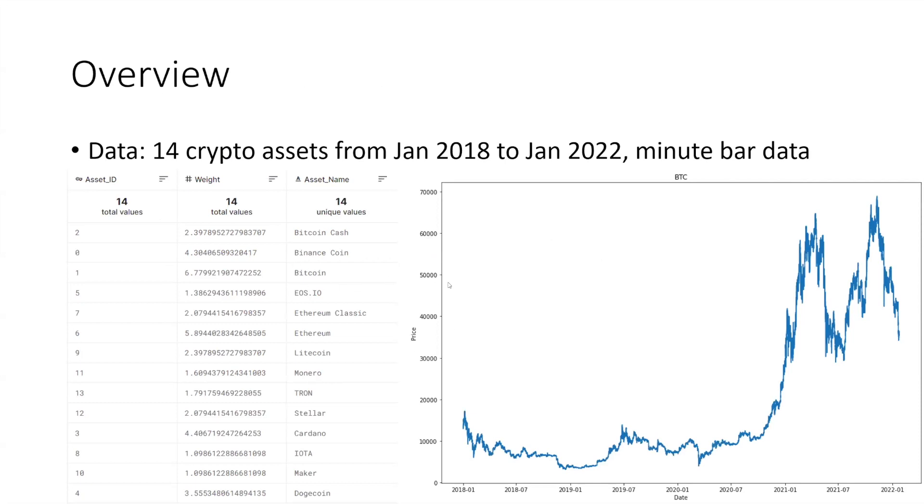In this competition we are given the minute bar data of 14 crypto assets from January 2018 to January 2022. It covers popular assets such as Bitcoin, Ethereum and Dogecoin. The host provides the weight for each asset which will be used for evaluation and target construction. The graph on the right hand side shows the price of Bitcoin in the training data. As you can see the distribution changed a lot after 2021 and this could be challenging for us to build a machine learning model.